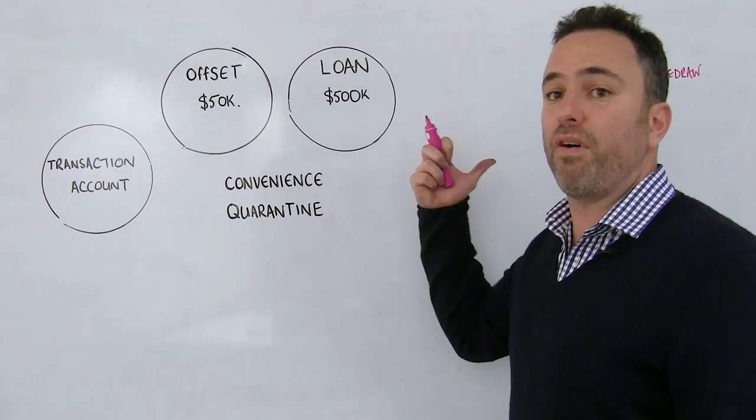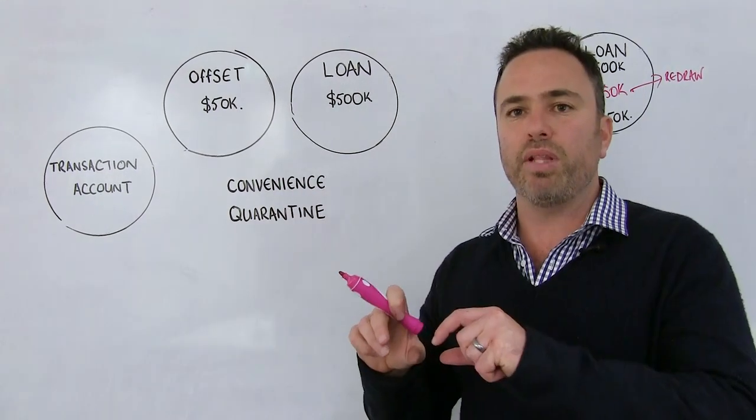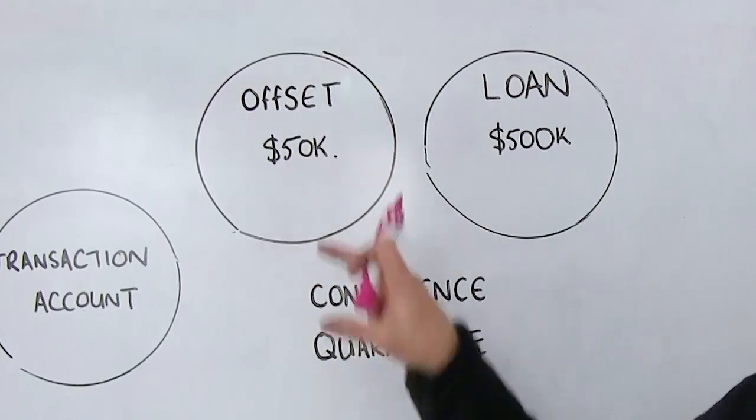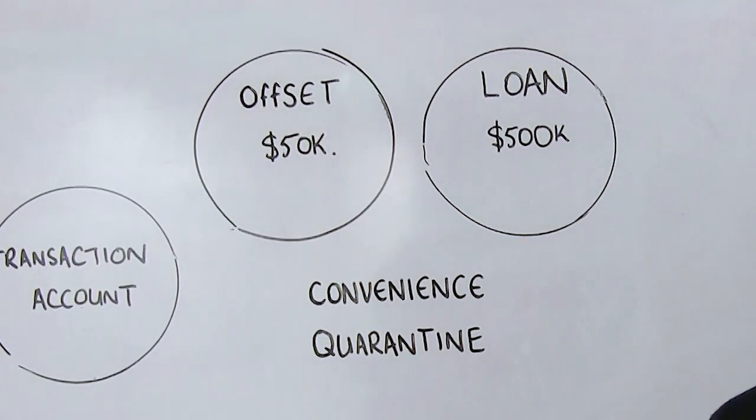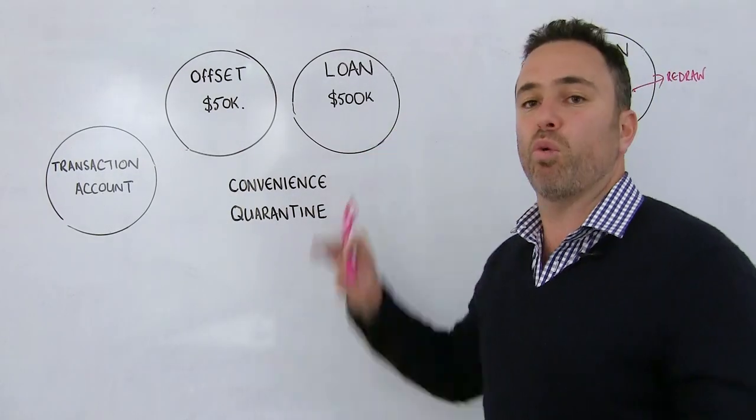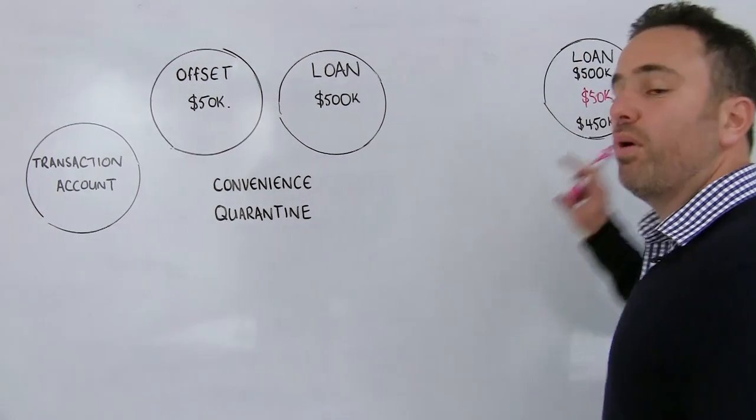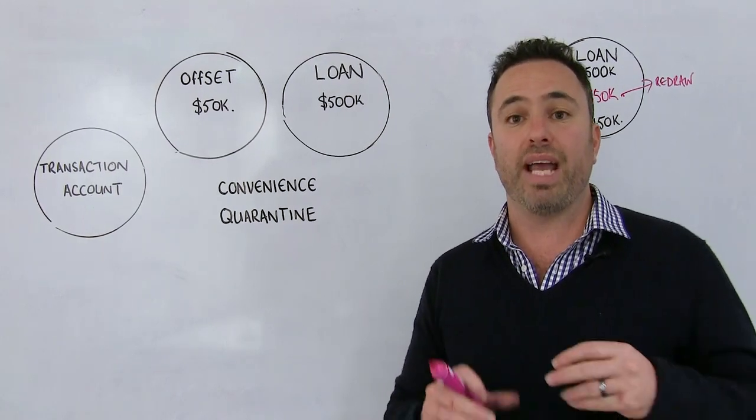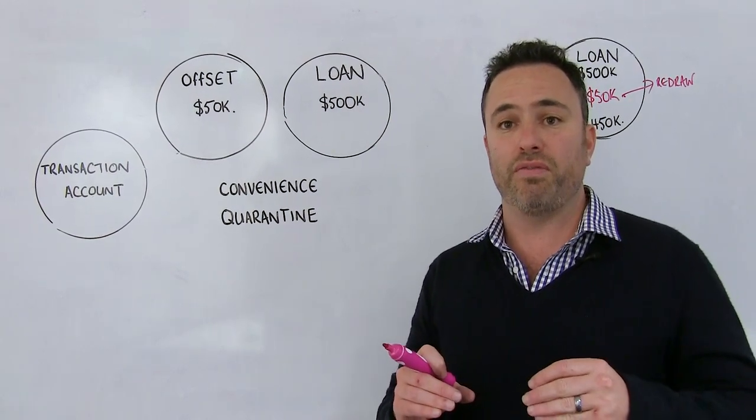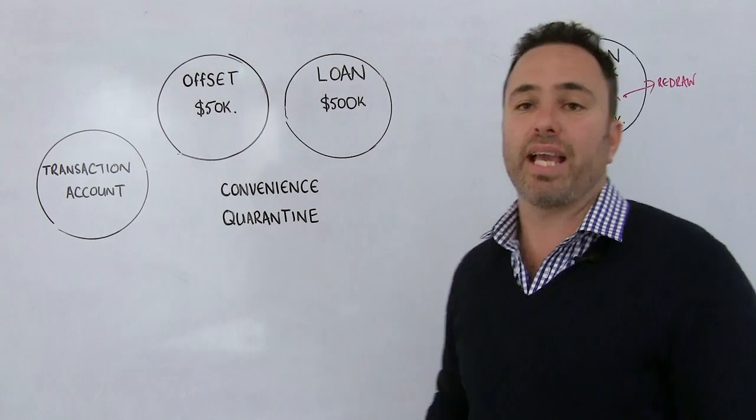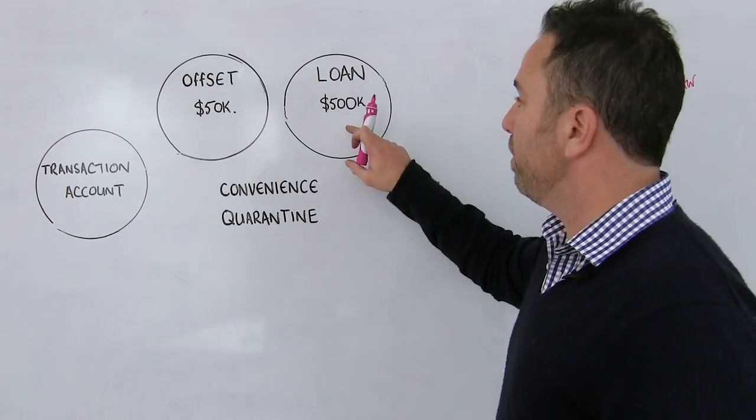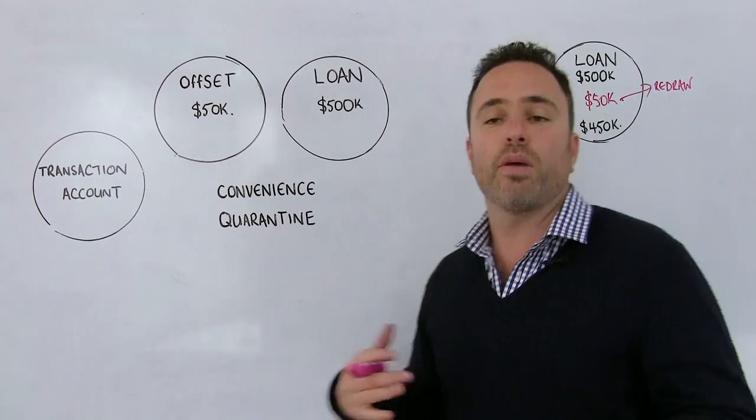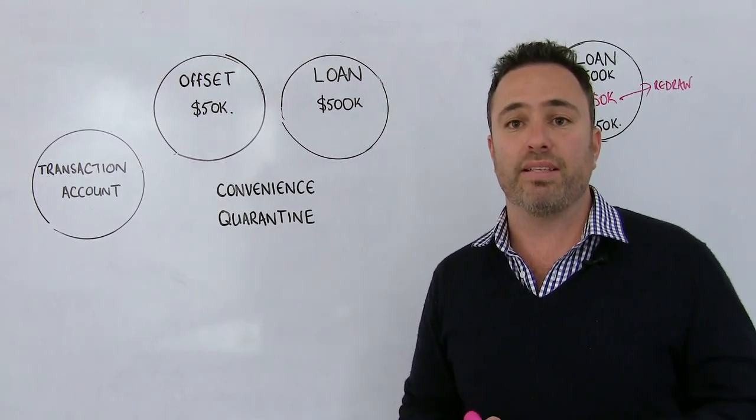Here I've got a loan again for $500,000. But instead of me putting the $50,000 into the loan, I'm putting the $50,000 into the offset account. Now, the way in which the bank will calculate my interest is exactly the same way as what they would do on the redraw facility. Over there, they'd calculate interest on my outstanding balance, which is $450,000. And here, they'd be calculating interest on the difference between the $500,000 minus $50,000. So again, they'd be calculating interest on $450,000.